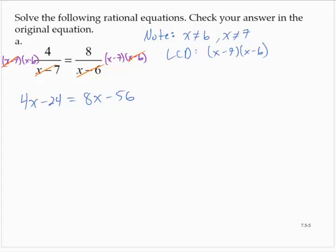And so let's solve that linear equation. I'll subtract 8x from both sides and I'll add 24 to both sides. Negative 4x is equal to 56 minus 24. That would be negative 32.